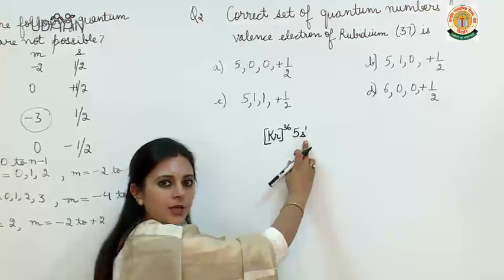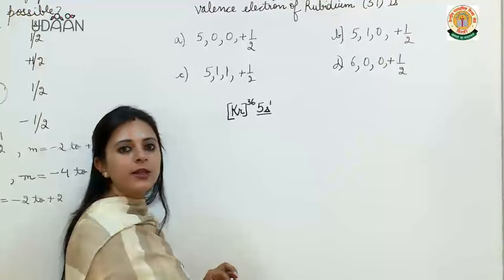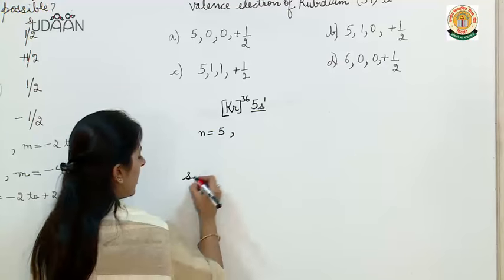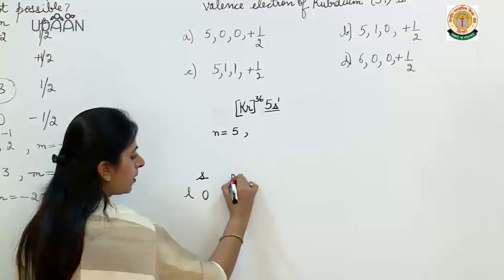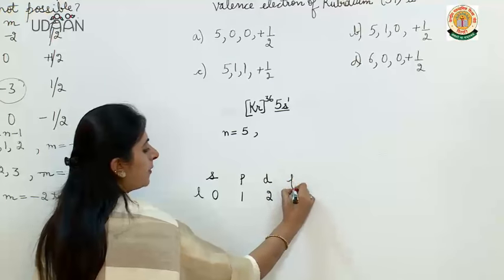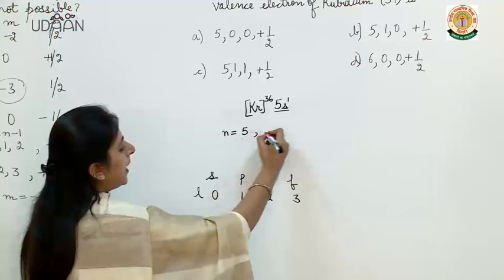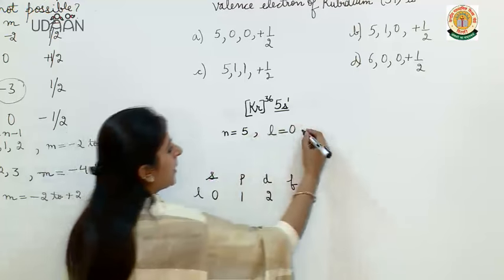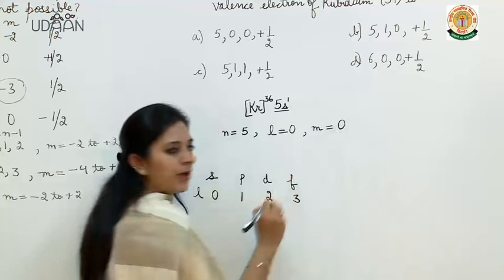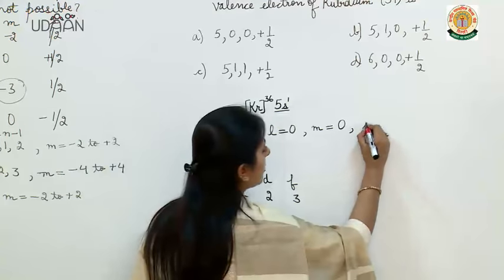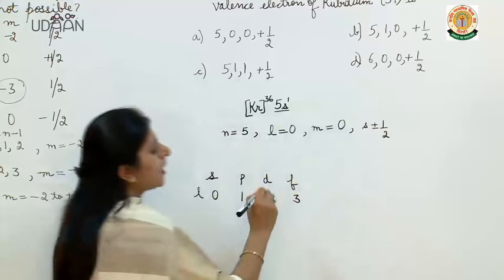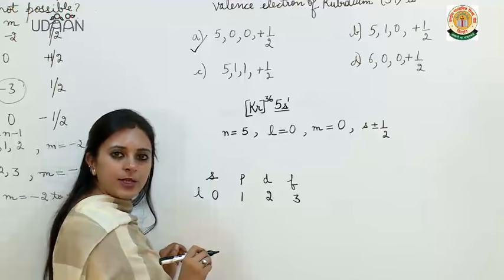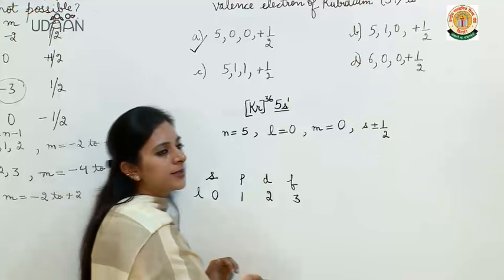The valence electron is in the 5s orbital, so n will be 5. For s orbital, l value is 0; for p orbital it is 1; for d orbital it is 2; and for f orbital it is 3. So l value will be 0. Since for s orbital l equals 0, m value will also be 0, and spin s value will be plus or minus half. From here you can see that option A is the correct answer.